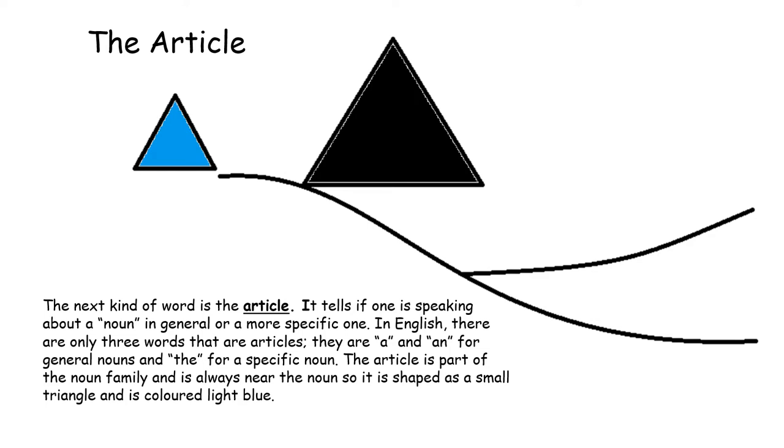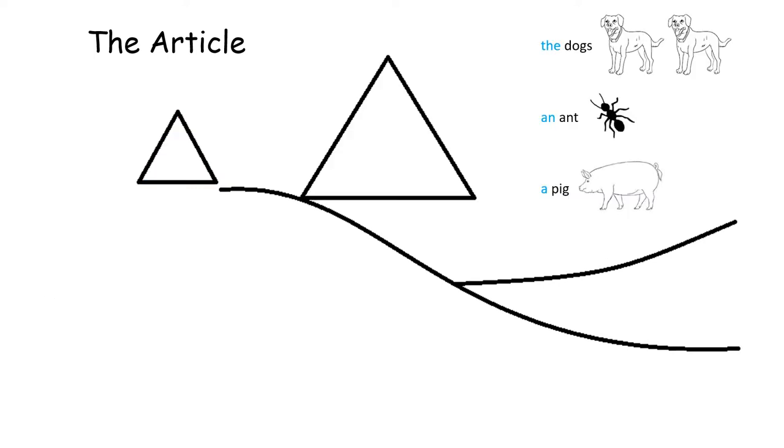The next kind of word is the article. It tells if one is speaking about a noun in general or a more specific one. In English, there are only three words that are articles. They are a and an for general nouns and the for a specific noun. The article is part of the noun family. It is always near the noun so it is shaped as a small triangle and is colored light blue. You can see here that I have colored the words that are articles light blue. The, an, and a are words that are articles.